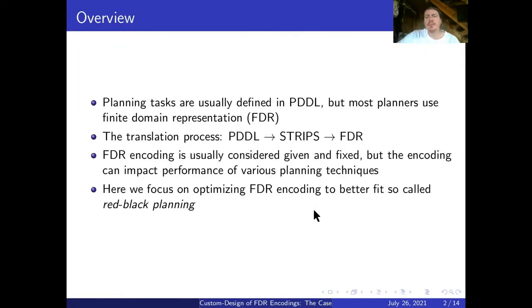Planning tasks are usually defined in PDDL, but most planners use finite domain representation. The translation process usually goes from PDDL to STRIPS and then STRIPS to FDR. FDR encoding of planning tasks are considered to be given and fixed, but they can actually impact performance of different planning techniques. Here we focused on optimization of FDR encoding that better fits a particular planning technique called red-black planning.